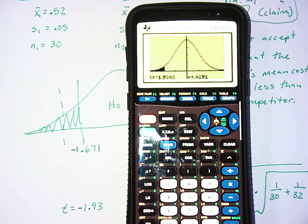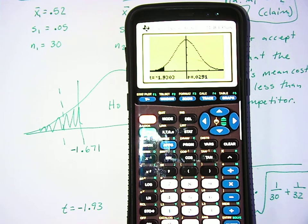All right, so there you see that my T-score is negative 1.93, which is what we got when we did it by hand, but it's obviously a lot faster.